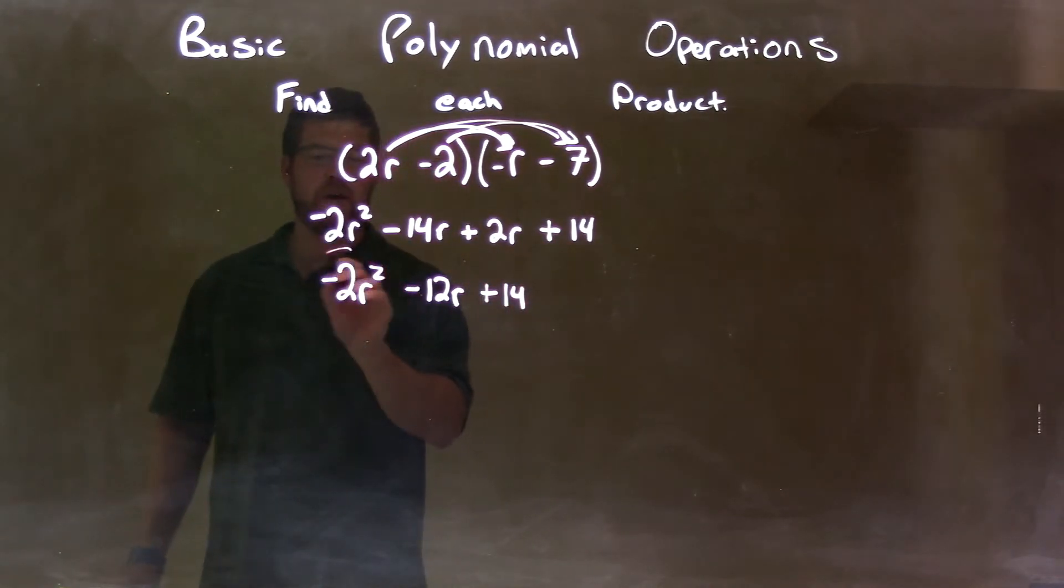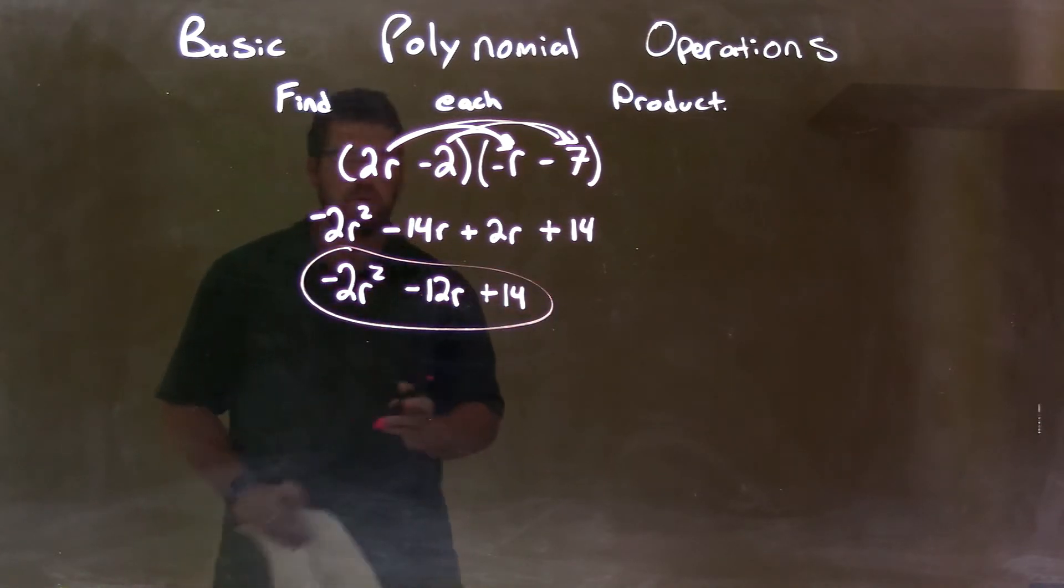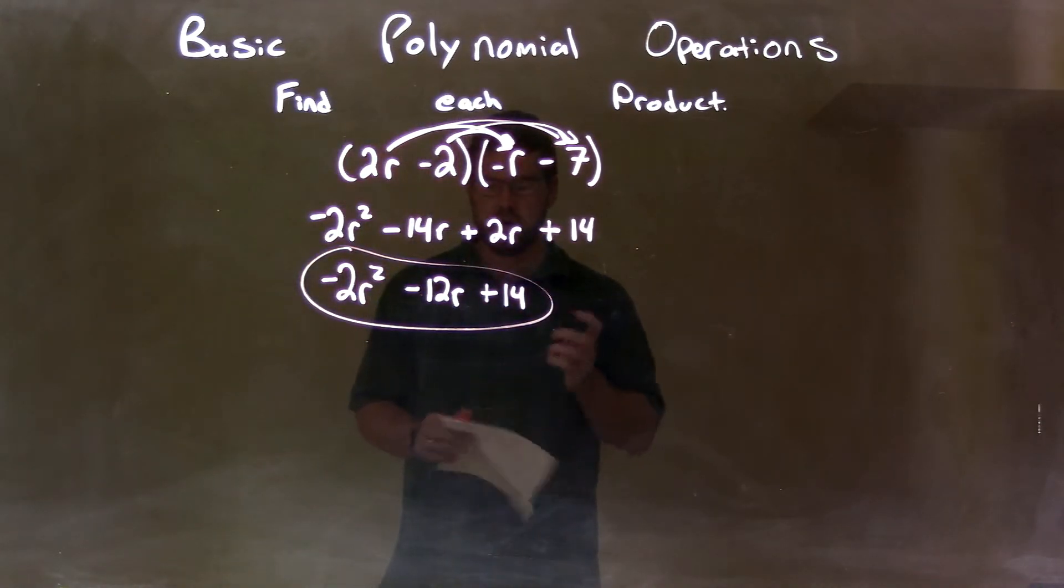Now we have our final answer: negative 2r squared minus 12r plus 14.